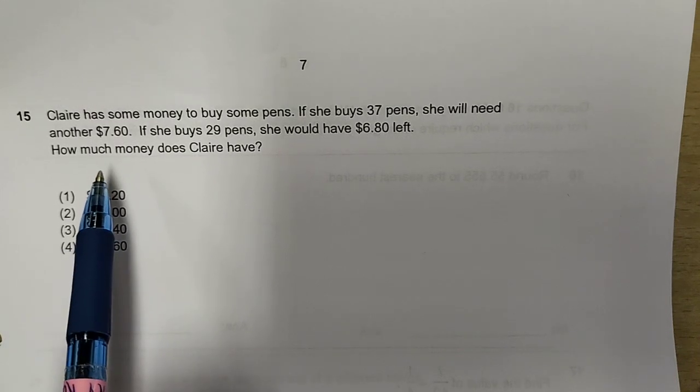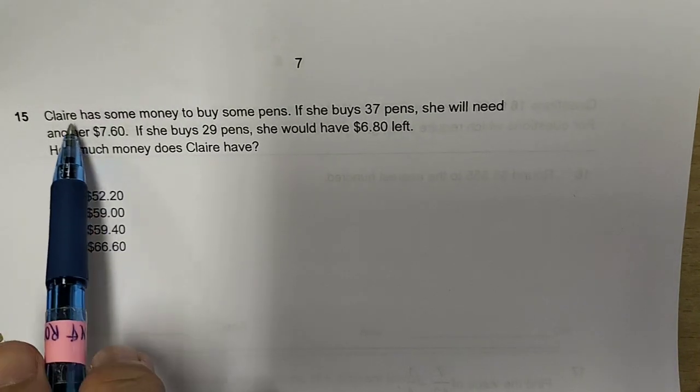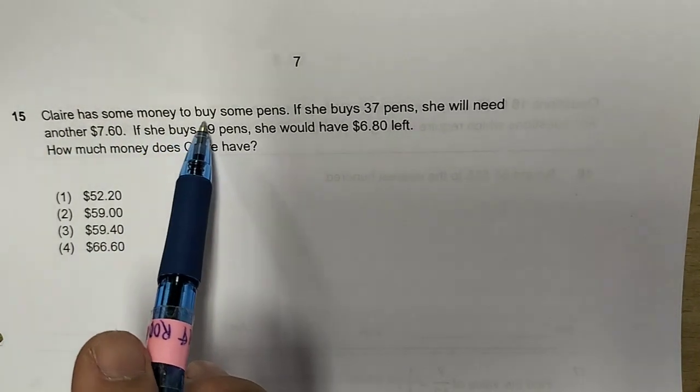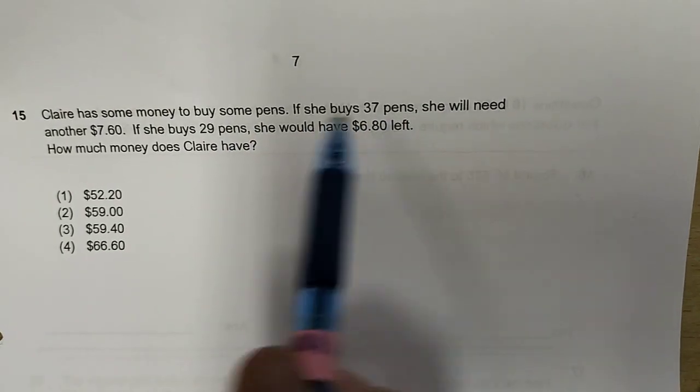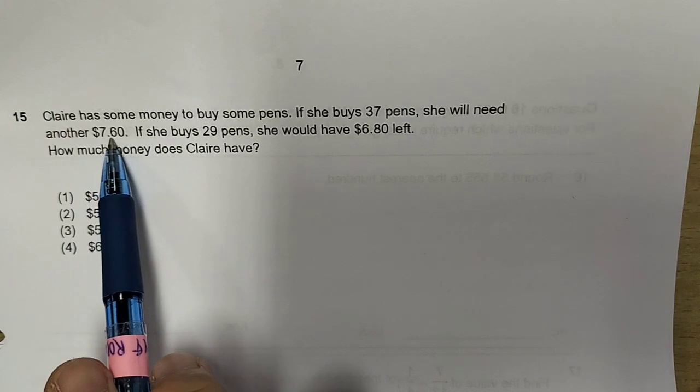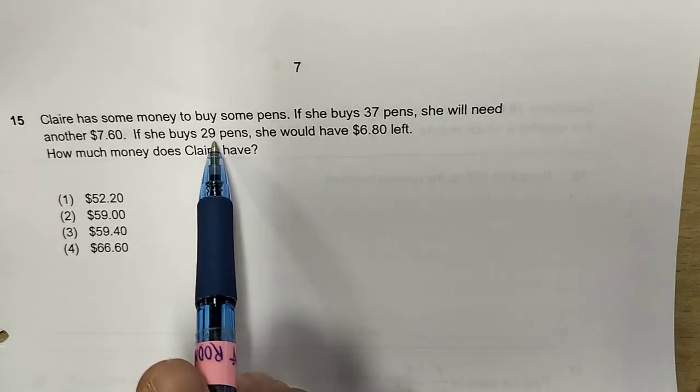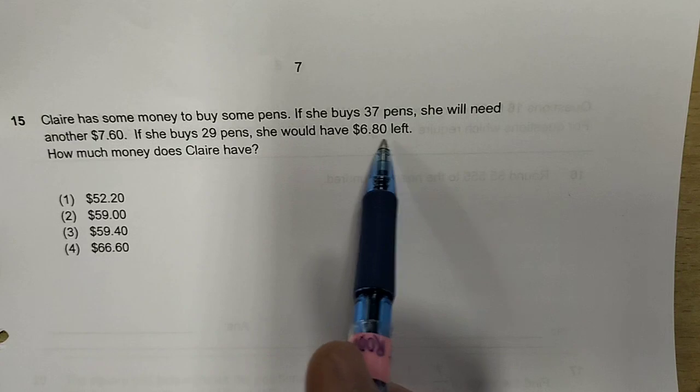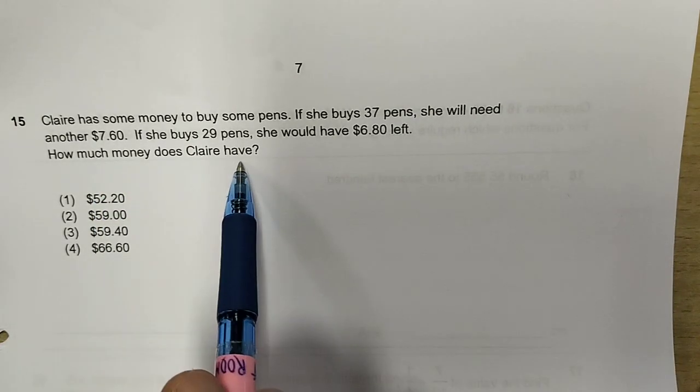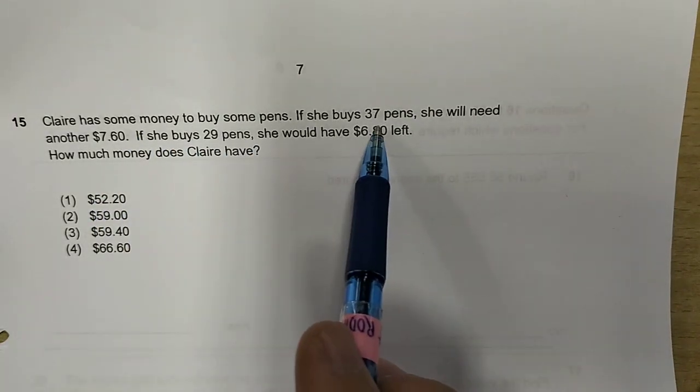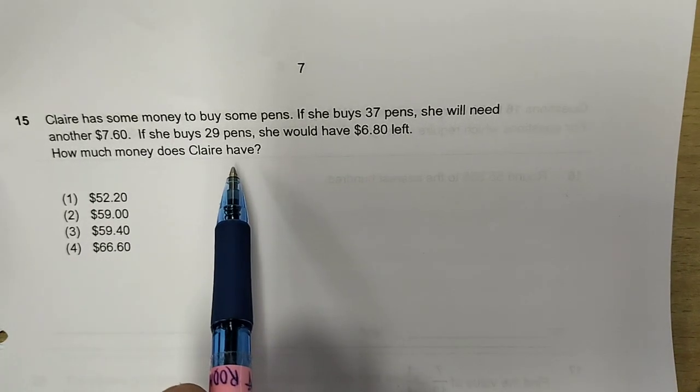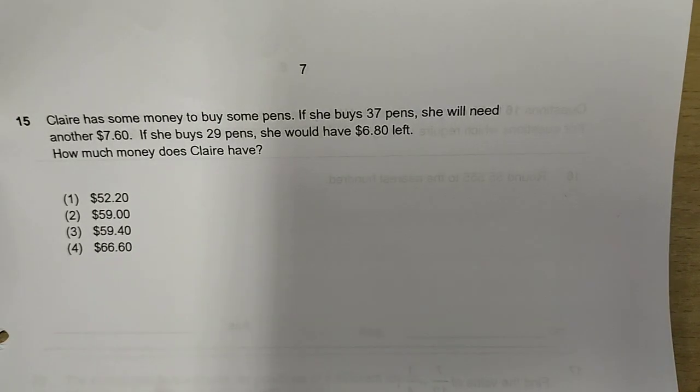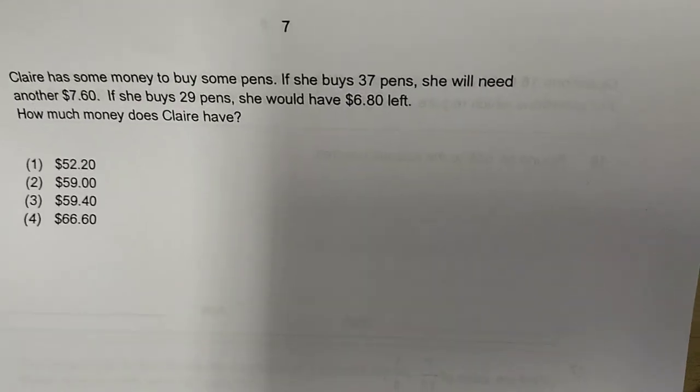Last one for section A. Claire has some money to buy some pens. If she buys 37 pens, she will need another $7.60. If she buys 29 pens, she will have $6.80 left. How much money does Claire have? So, these are, we are making an assumption. So, she has some money, but she's not enough to buy all the things that she wants. So, how shall we do this?